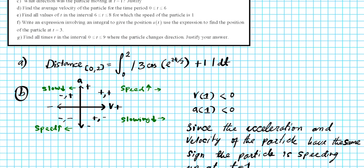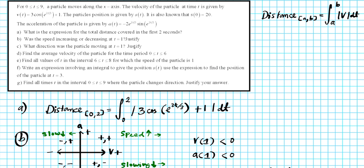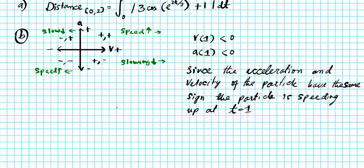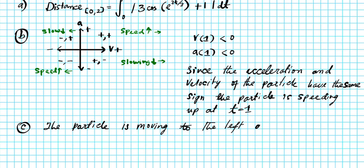Now let's take a look at Part C: What direction was the particle moving at t = 1? Remember, velocity indicates the direction of the particle. At t = 1, the velocity was negative as indicated in Part B, so the object is moving to the left. The particle is moving to the left at t = 1 because v(1) < 0.